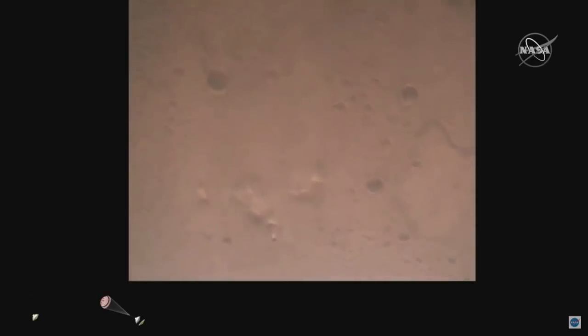Navfilter converged velocity solution 3.3 meters per second altitude 7.4 kilometers. Now has radar lock on the ground, current velocity is about 100 meters per second, 6.6 kilometers above the surface. Perseverance is continuing to descend on the parachute.